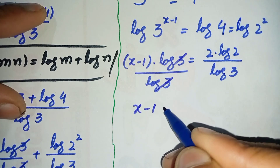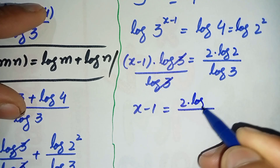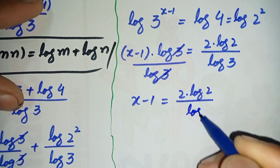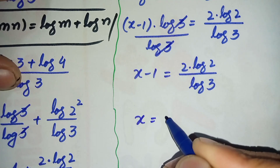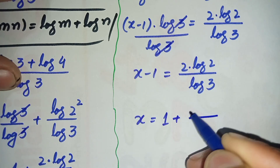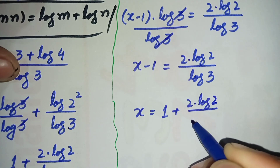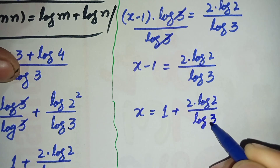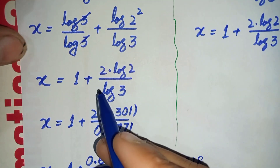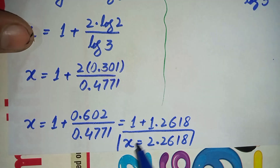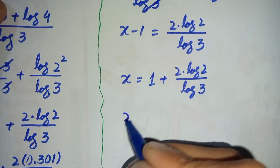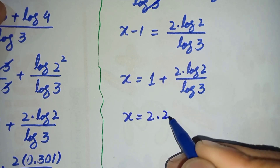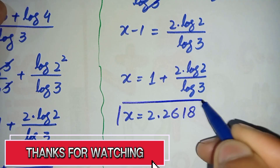So x minus 1 is equal to 2 times log of 2 divided by log of 3. We shift minus 1 to the right hand side to get x is equal to 1 plus 2 times log of 2 divided by log of 3. This is the same step as in method 1, so after simplifying we get the value of x is 2.2618, which is our required answer.